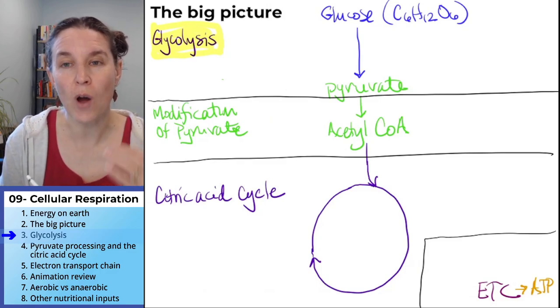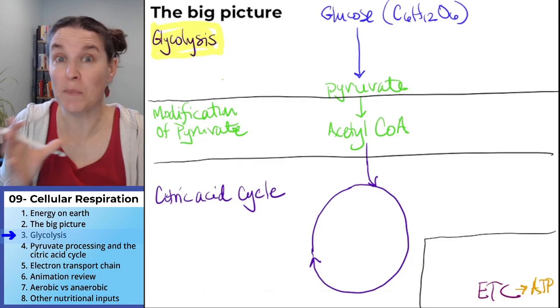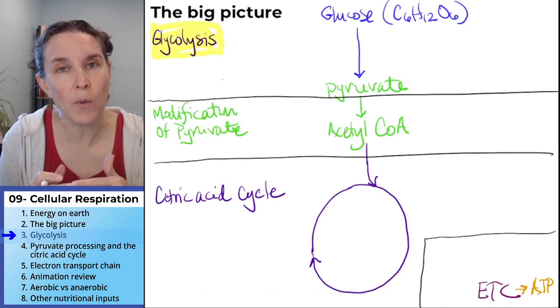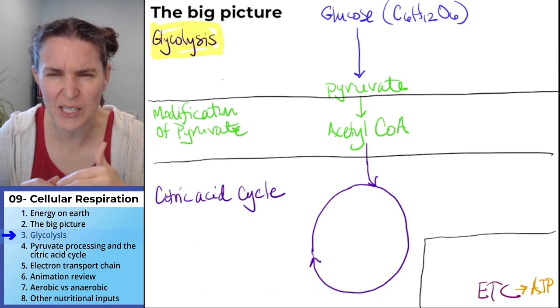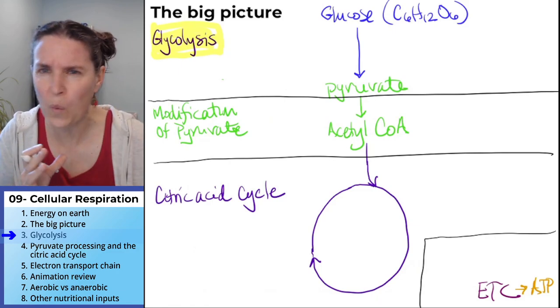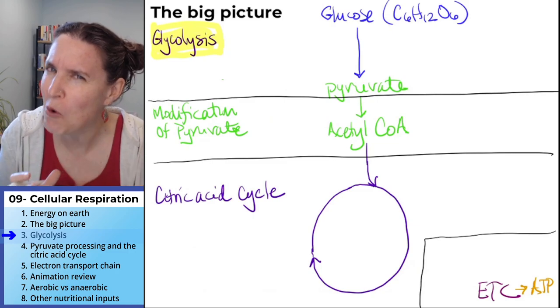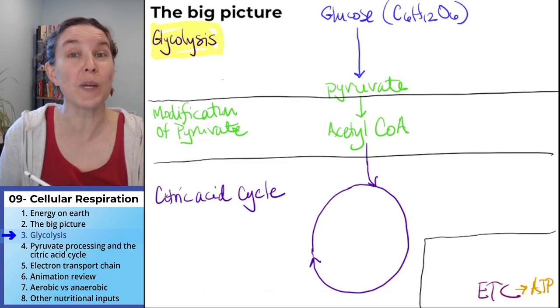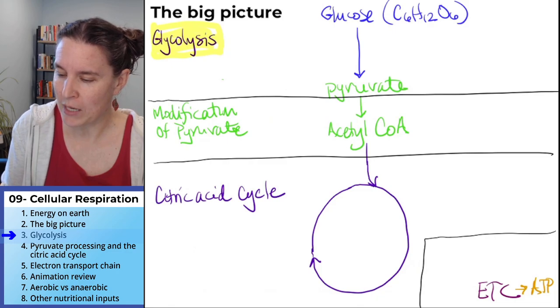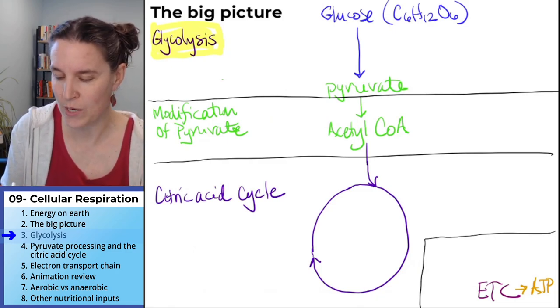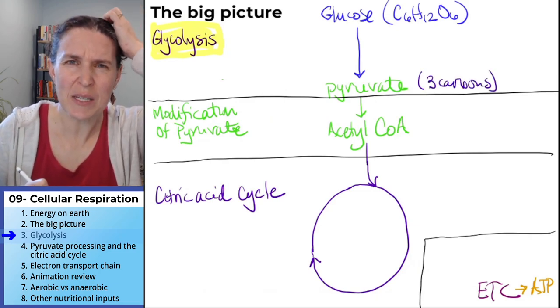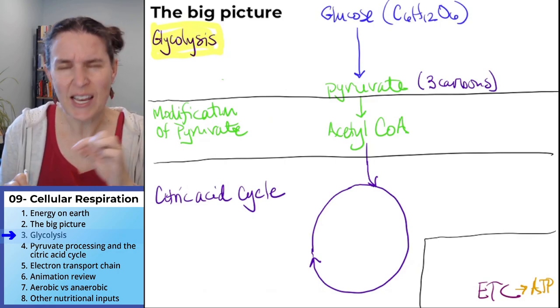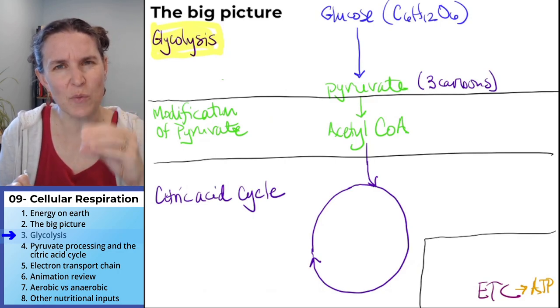Let's look at glycolysis. We've already got the big picture, so now we want to have some sense of okay, we took glucose and we turned it into pyruvate. What's the point of this and what did we get out of it? The first thing I want to make a note of is that this pyruvate has three carbons. This is relevant because that should tell you if pyruvate has three carbons...